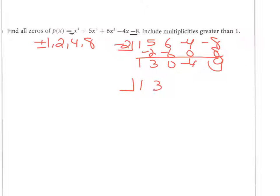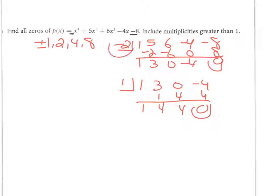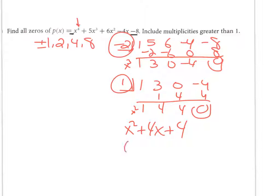Now I try another zero from my list on the resulting cubic. Testing +1: it works as well, giving another zero. I've now reduced the polynomial down to the quadratic x² + 4x + 4. Factoring that: what factors of 4 add to 4? That's (x + 2)(x + 2).